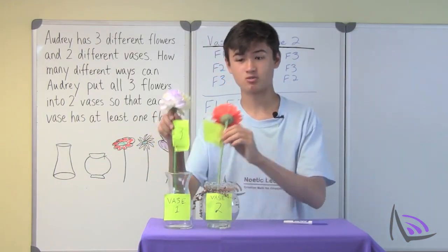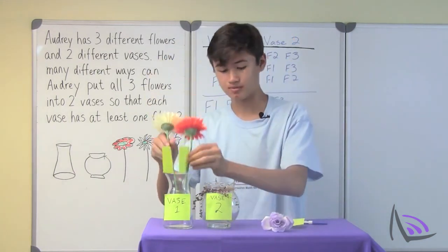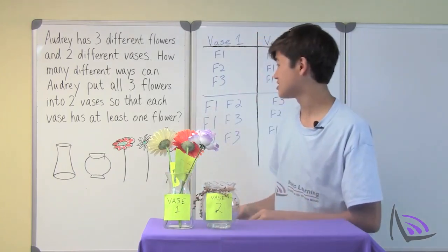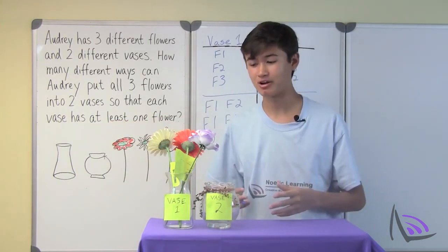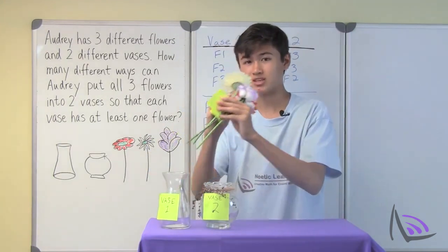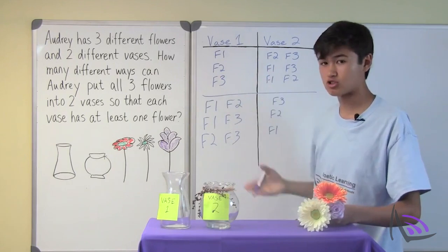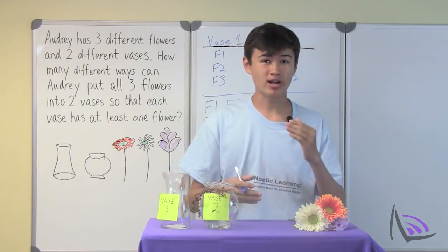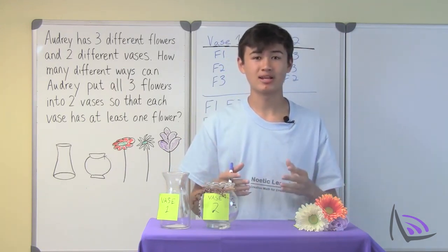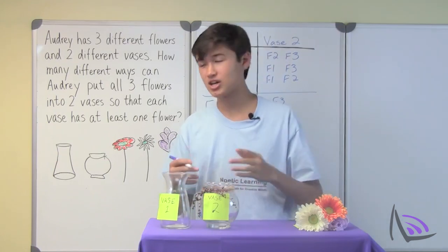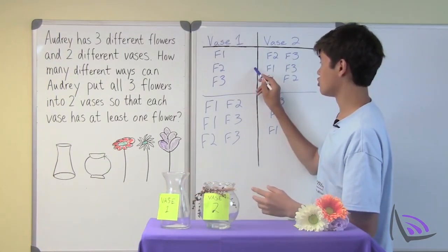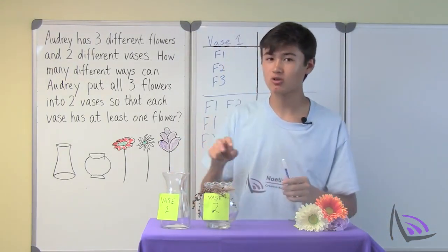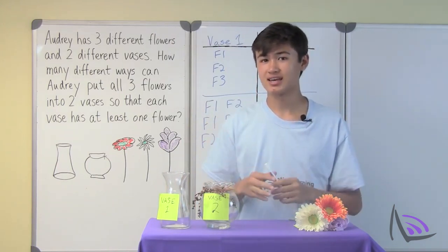Now let's try putting three flowers in vase one — F1, F2, and F3. But look, there are zero flowers in vase two, and the question says each vase has to have at least one flower, so this wouldn't work. That means we can only have one or two flowers in vase one. We've now covered all the scenarios. Since we did it in an organized and orderly way, we know we didn't double count anything or skip any scenarios. So there are one, two, three, four, five, six different ways that all three flowers can go into the two vases so that each vase has at least one flower.